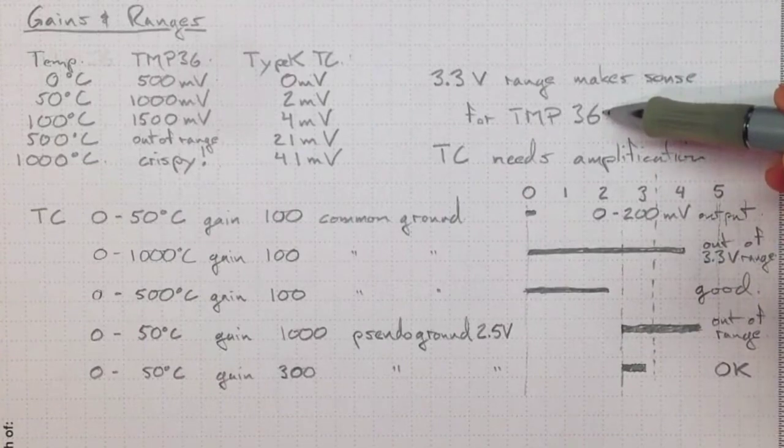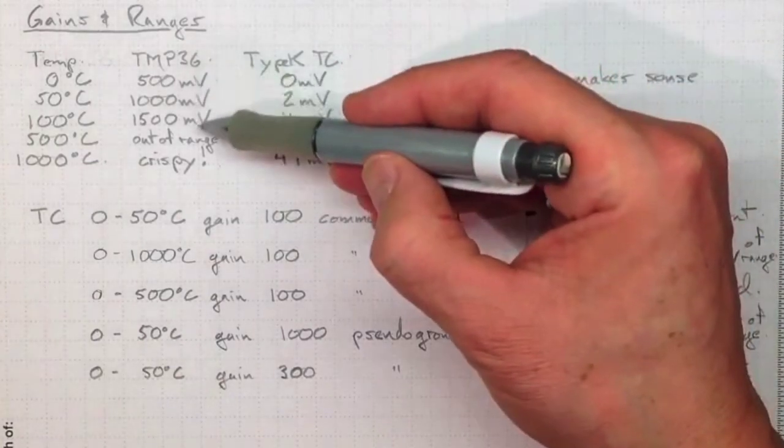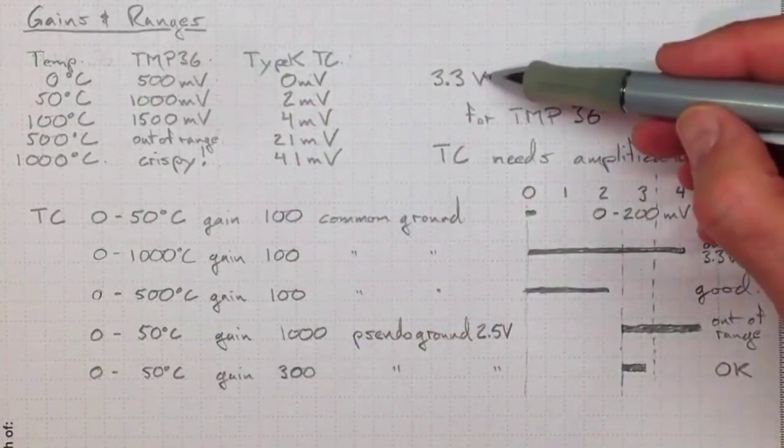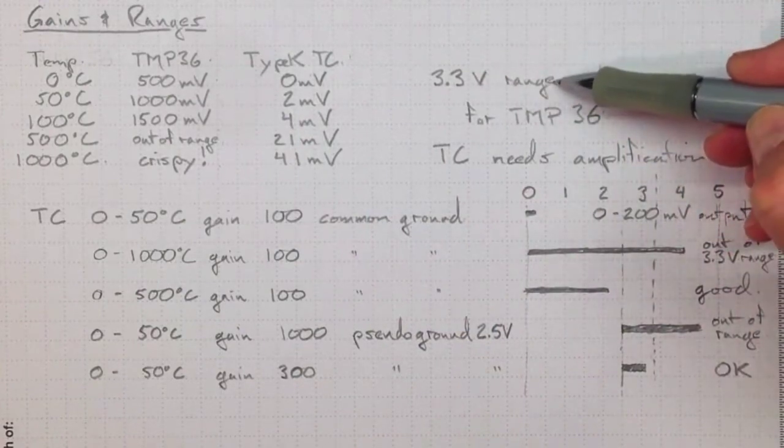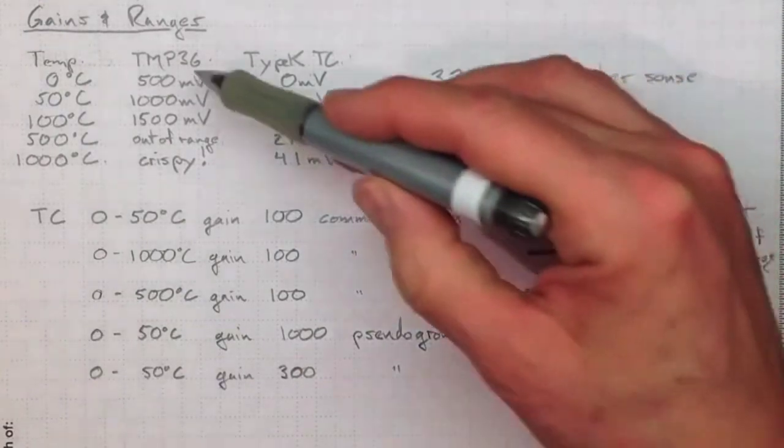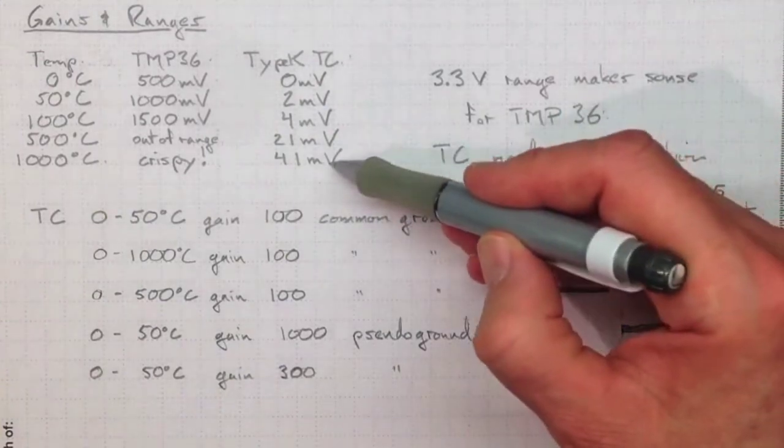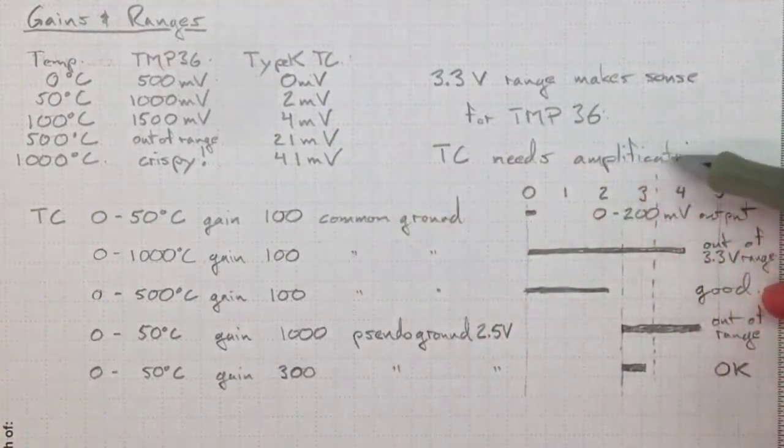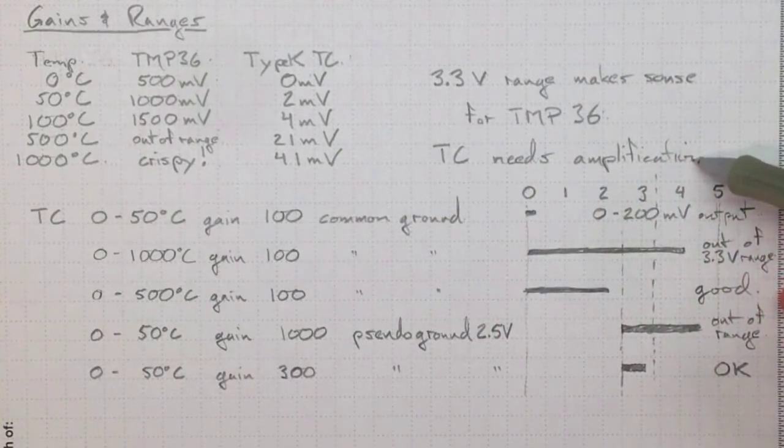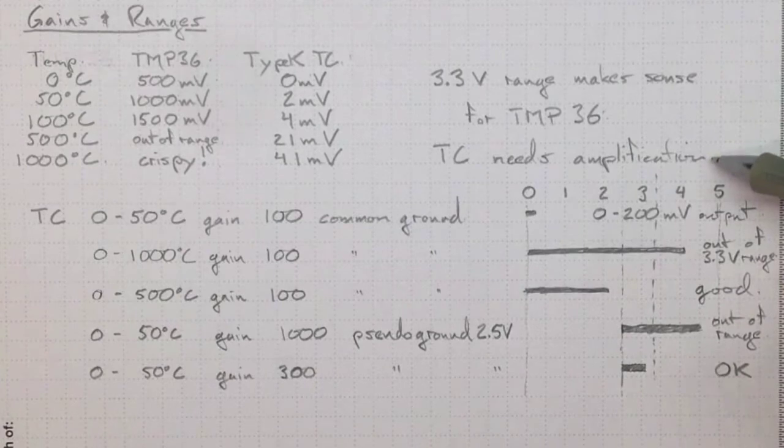Looking at the TMP-36, if we're covering a reasonable range, then the 3.3 volt input range on the Arduino directly from the TMP-36 makes sense. There's no way we're ever going to get a good reading from the thermocouple without using some amplification, so now we need to figure out what sort of amplification we'd like to get.